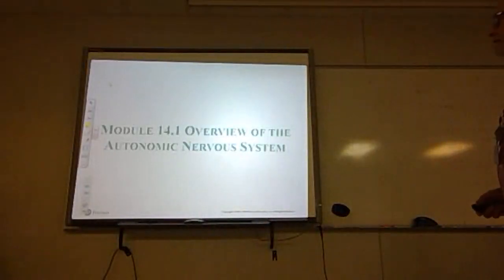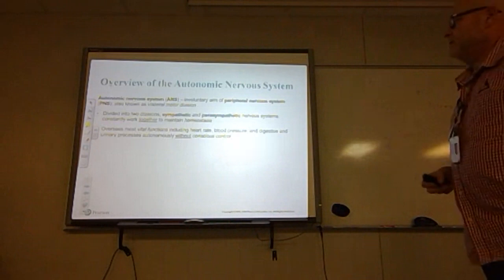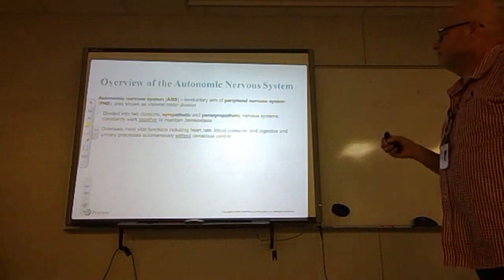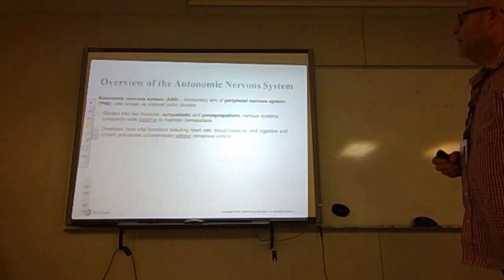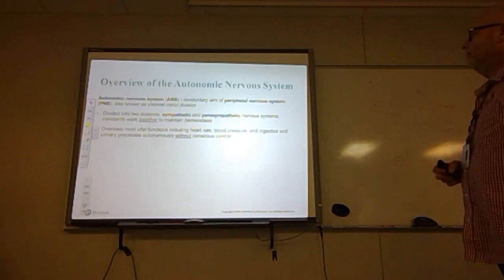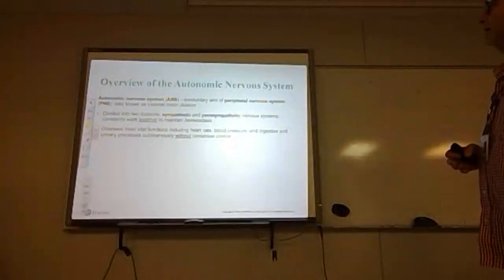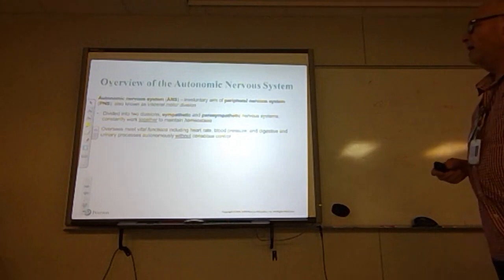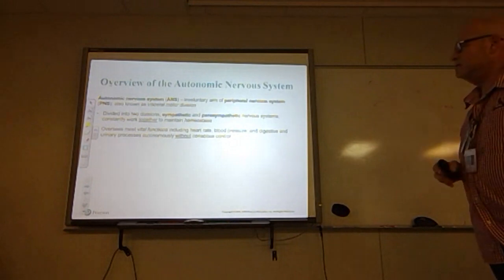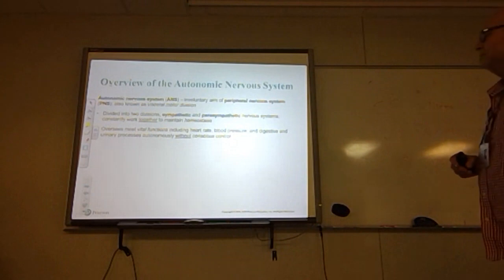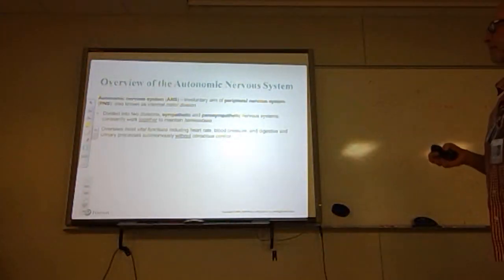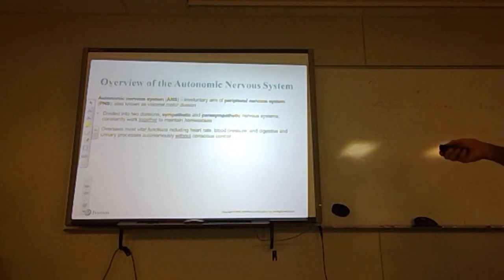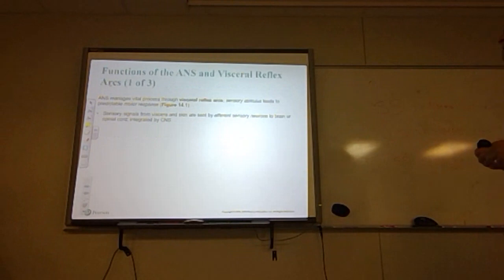Let's start talking about the autonomic nervous system, chapter 14, abbreviated the ANS. This is the involuntary arm of the peripheral nervous system, also known as the visceral motor division, divided into two components: the sympathetic and parasympathetic divisions. These two systems work together to maintain homeostasis, overseeing vital functions such as heart rate, blood pressure, digestion, and urinary processes — things done automatically without conscious control.